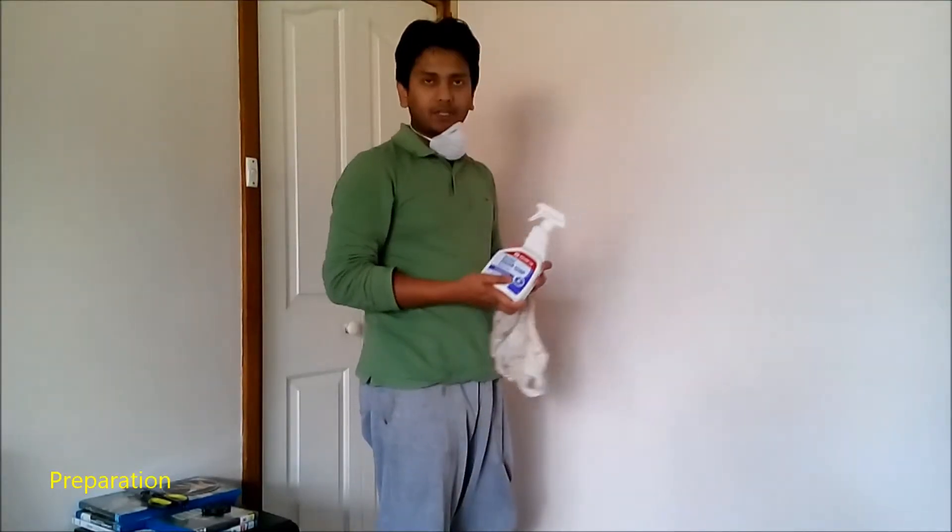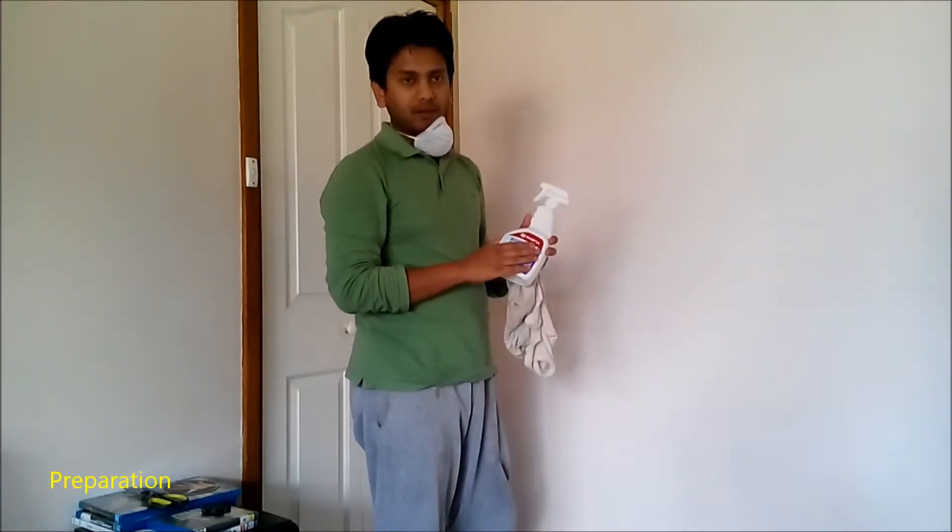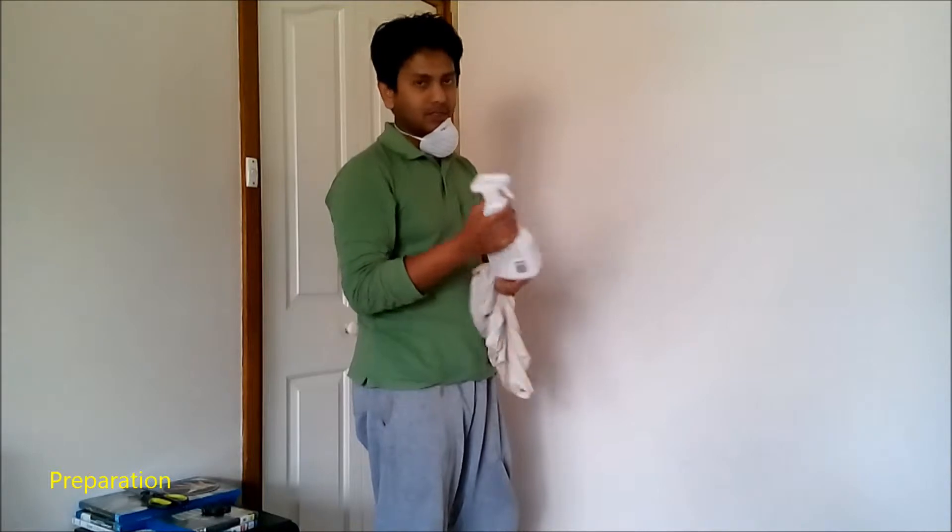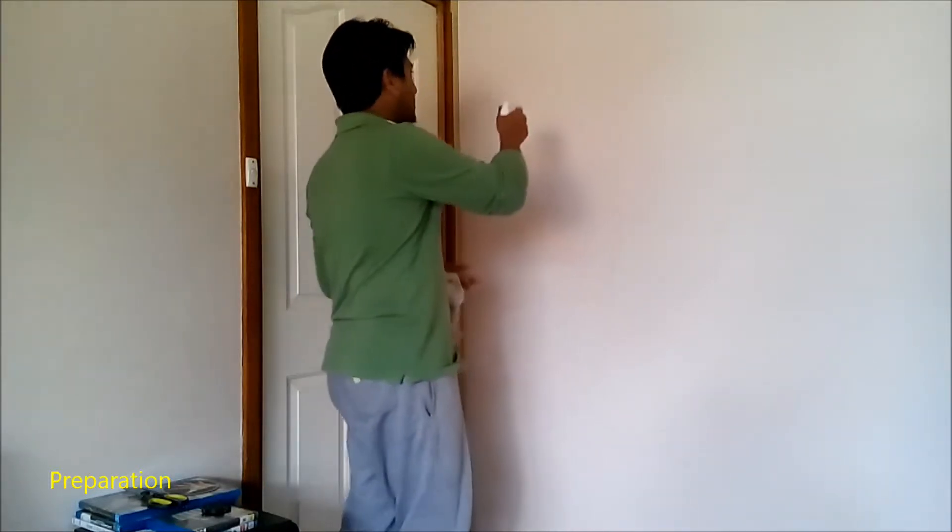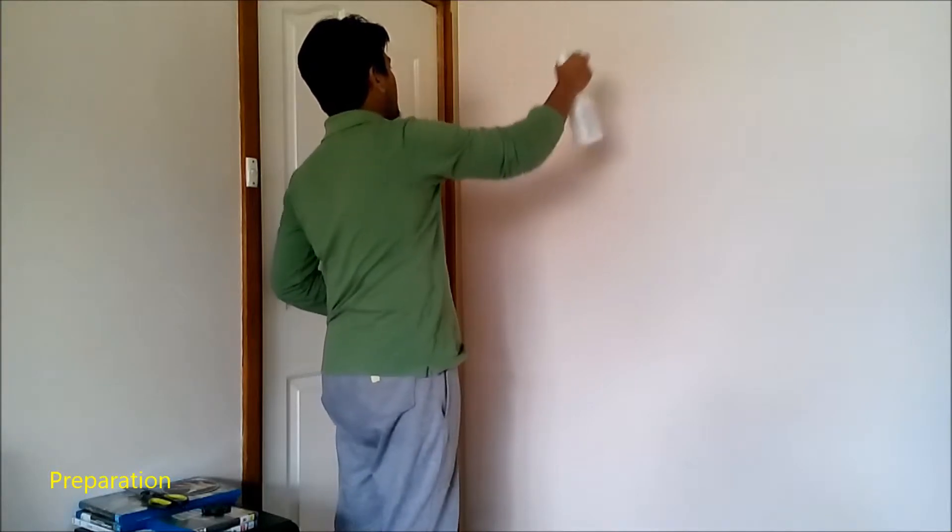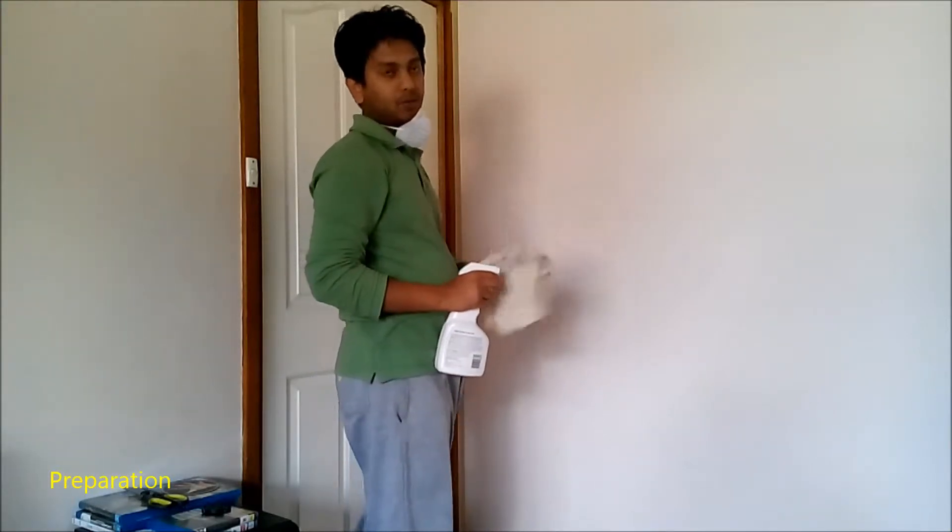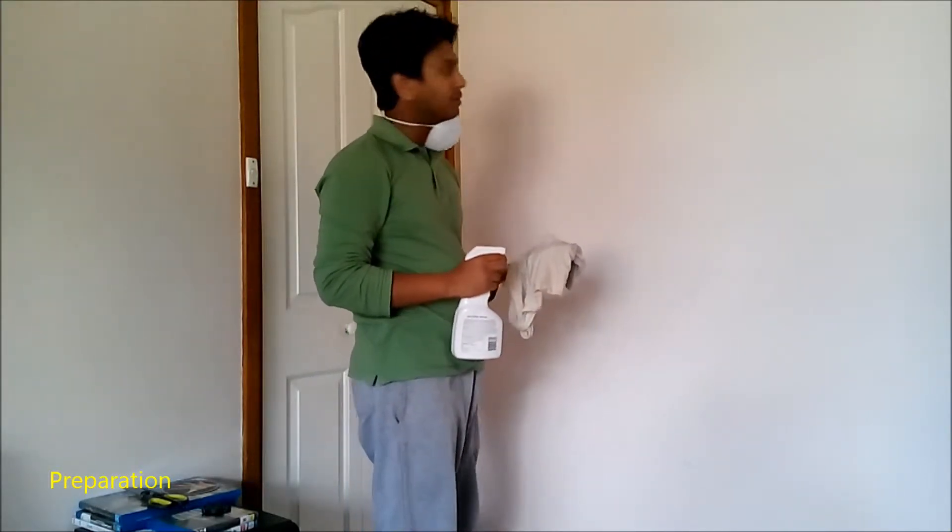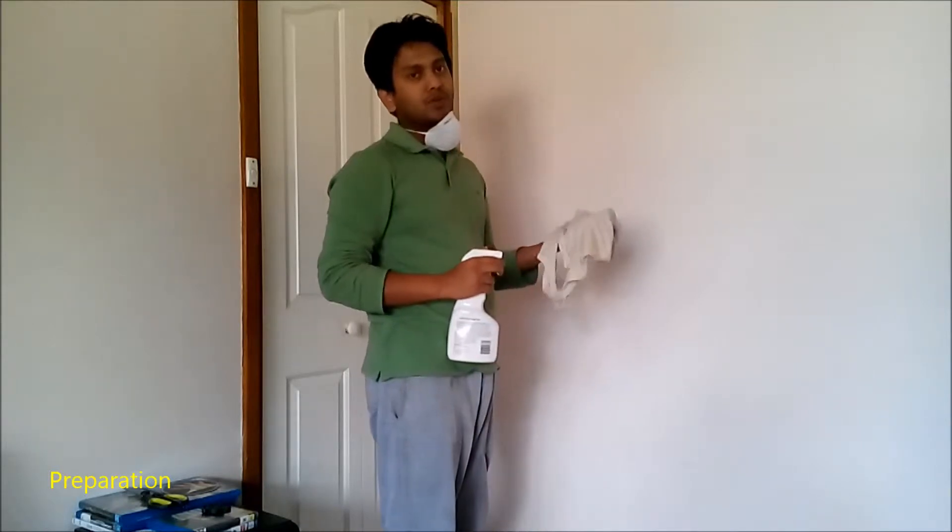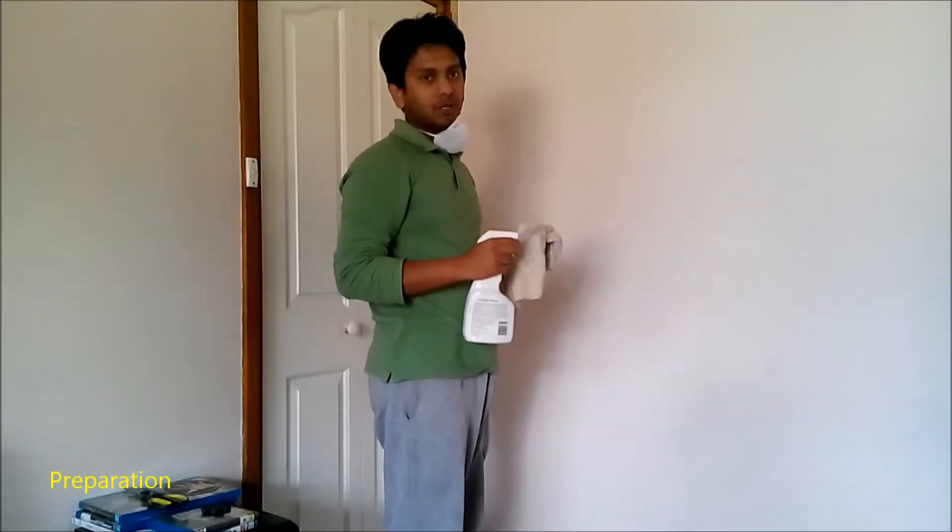Okay, now that we have done with the masking tape, now we're going to use this instant sugar soap to clean up the wall. So with this one, what you've got to do is, this is already pre-mixed. You don't have to make a solution yourself. So you just pretty much spray it up and clean it up, wash it up. It doesn't have to be really good. You just have to make sure there is no grease or any dust particle on the wall. That's all you want to do.